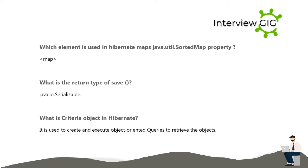What is the return type of save? java.io.Serializable. What is a criteria object in Hibernate? It is used to create and execute object-oriented queries to retrieve objects.